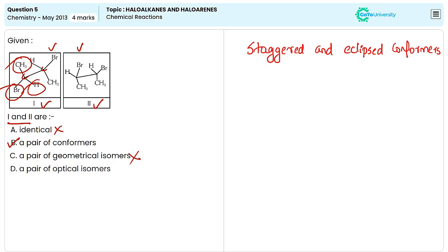And the last one is a pair of optical isomers. This is again wrong answer because optical isomers are chiral molecules that are non-superimposable mirror images of each other. So from these options, the correct answer is option B.